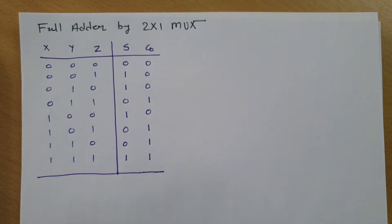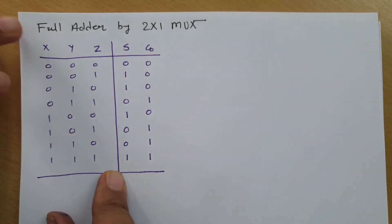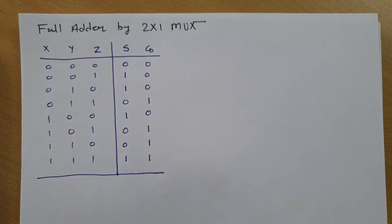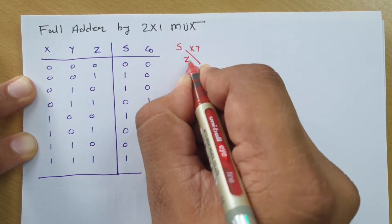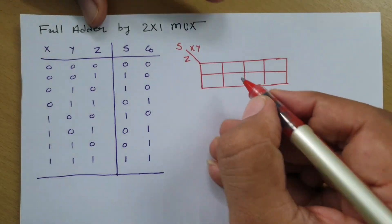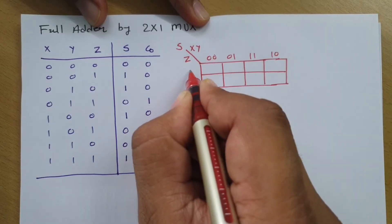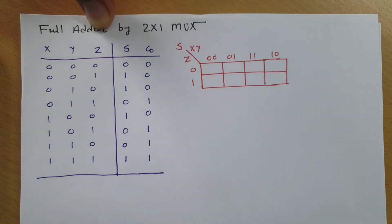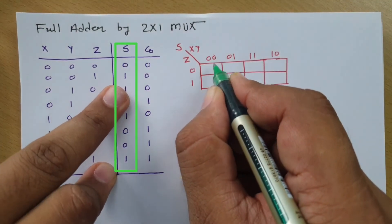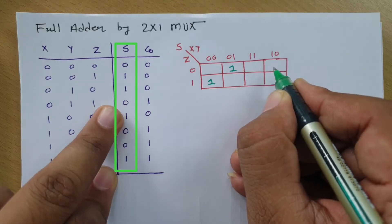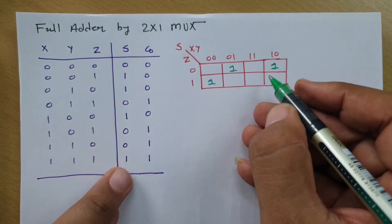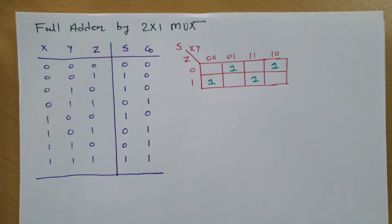This is the full adder truth table. The next step is to make a Karnaugh map of sum first, and then we will solve it for carry. So here we have sum with input variables x, y, and z. Inputs are 00, 01, 11, 10 and z is 0 and 1. The 1s are placed at locations 001, 010, 100, and 111.